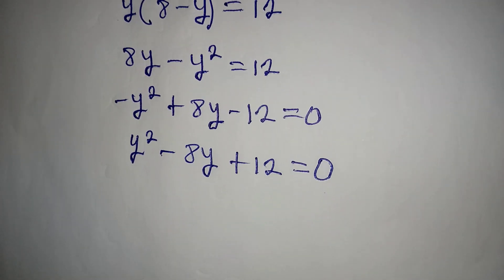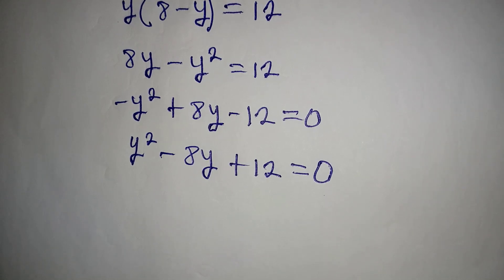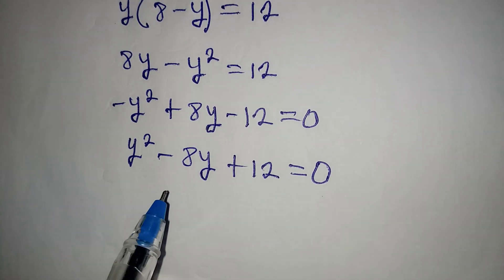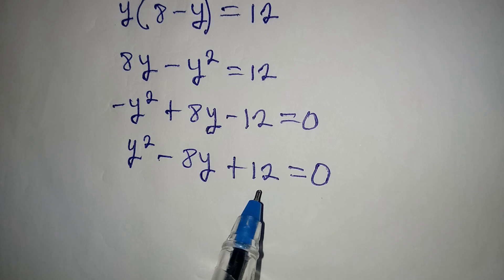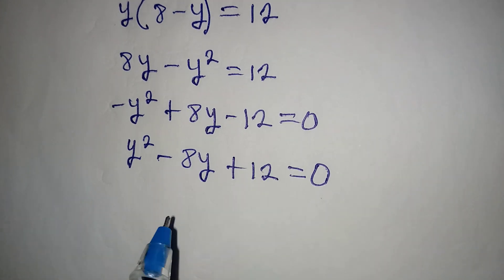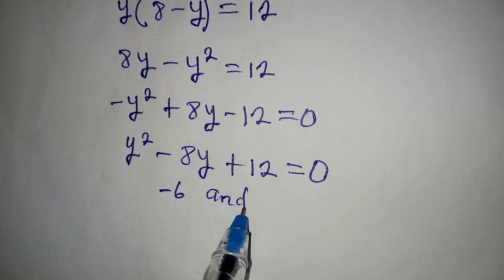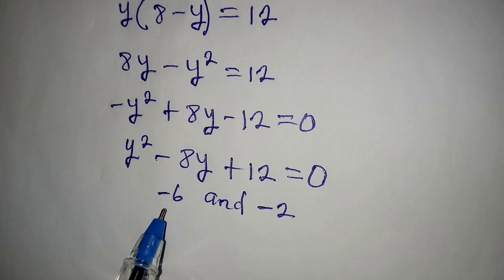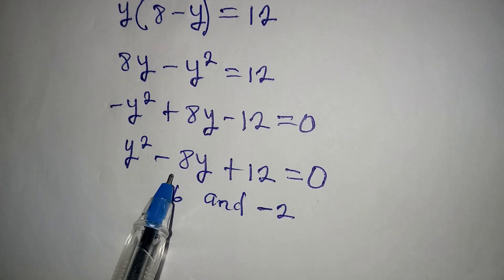Now we have a quadratic equation and we'll use the factorization method. We look for two numbers that multiply to give 12 and add to give minus 8. The numbers should be minus 6 and minus 2, because minus 6 times minus 2 gives plus 12, and minus 6 plus minus 2 gives minus 8.